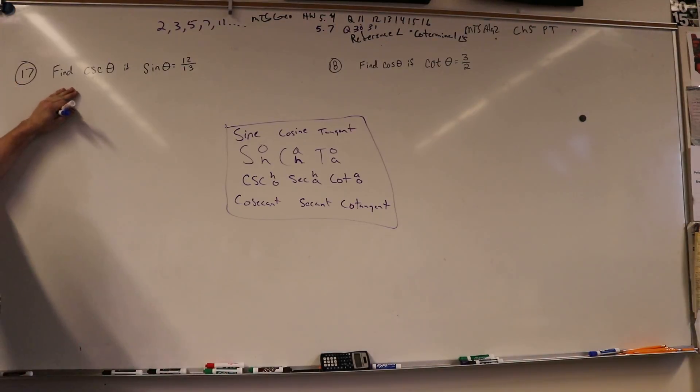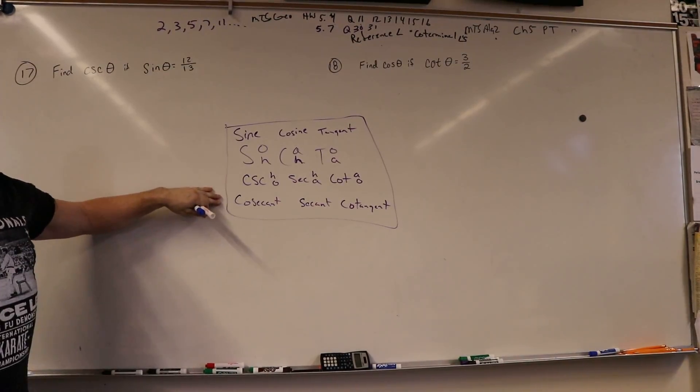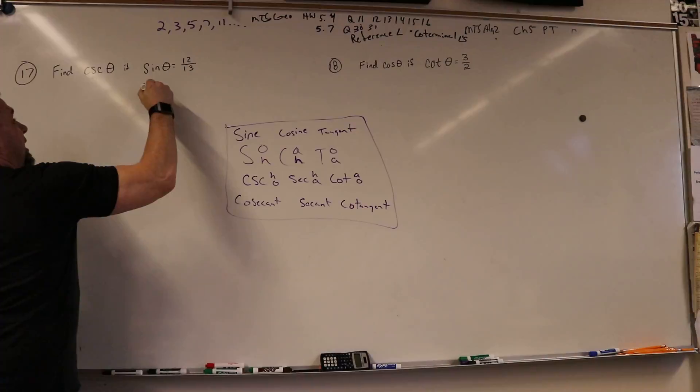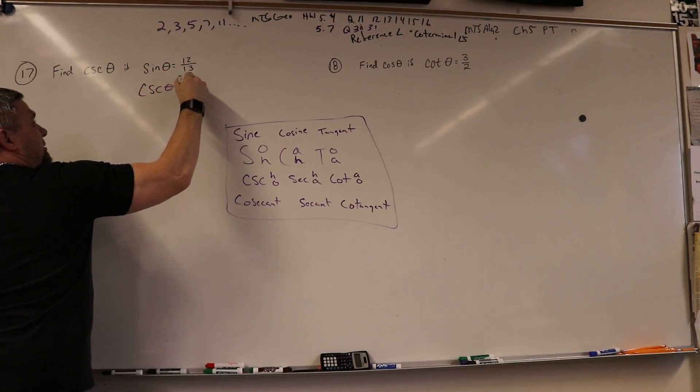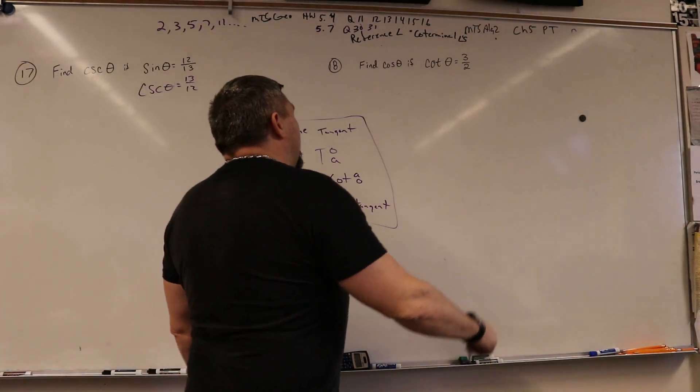So we're trying to get this. Find the cosecant if the sine. Well, that's pretty simple, because cosecant's the opposite, or sorry, the inverse of sine. So cosecant of theta is just going to be 13 over 12.